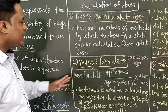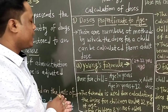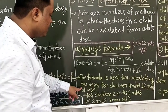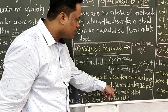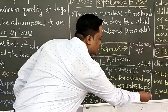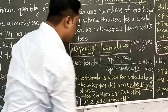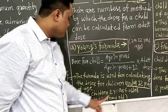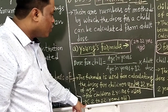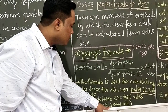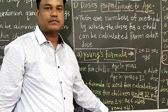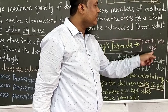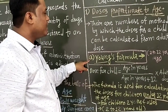Young's formula is used for calculating doses for children under 20 years — specifically for children 2 years and older. This means the formula is applied for children in the age group of 2 to 20 years.